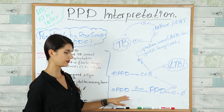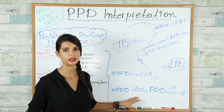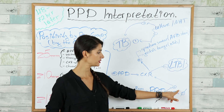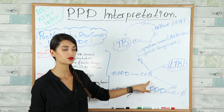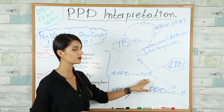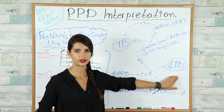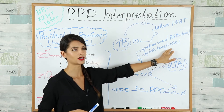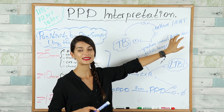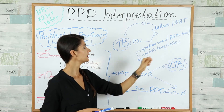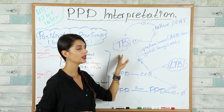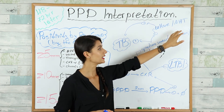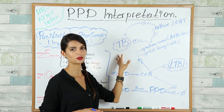If the initial PPD test is negative on first-time testing, repeat the PPD in two weeks. If that is also negative, no further action is needed; if positive, perform a chest X-ray. For an initial positive PPD, also perform a chest X-ray. If the chest X-ray is negative, the diagnosis is latent TB infection. If positive, perform further tests: gastric lavage in children, or sputum smear stained for acid-fast bacilli in adults. If these are positive, active TB is confirmed; if negative, proceed to culture and nucleic acid-based tests for confirmation.